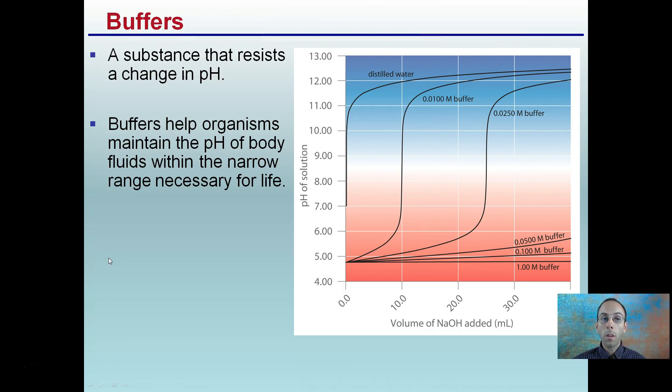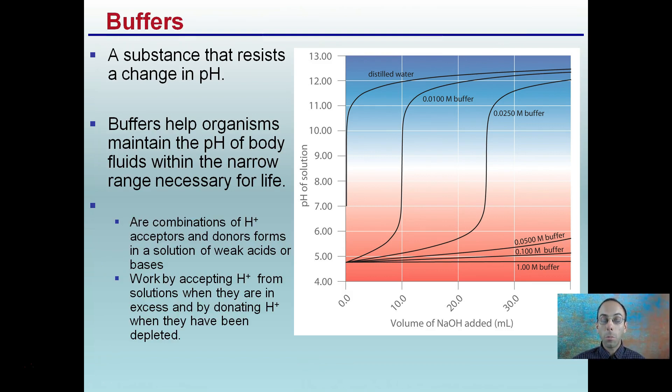Buffers are very important. They're substances that resist the change in pH. Buffers help organisms maintain the pH of the body fluids in a narrow range necessary for life. They're combinations of hydrogen ion acceptors and donors formed in a solution of weak acids and bases. This works by accepting hydrogen ions from solution when they're in excess and donating hydrogen ions when they have been depleted. A buffer is helping reduce the large swings that may occur in a solution.